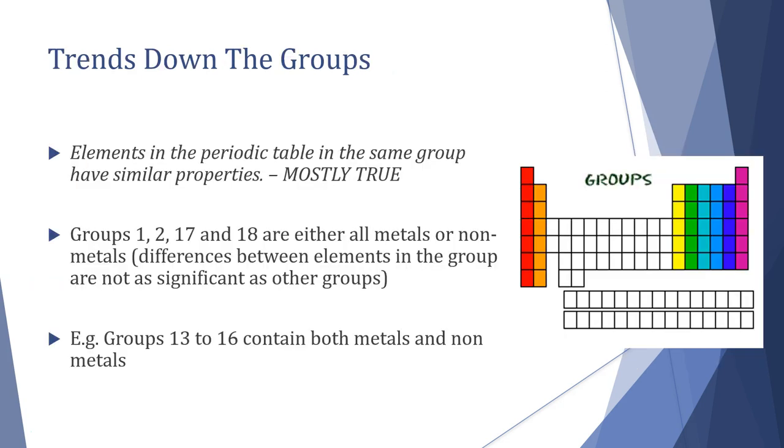So down the group, elements in the periodic table have similar properties - this is mostly true and certainly true for group one and group two, group 17 and group 18. However we do see some variation within here, and if you think about it there are non-metals at the top of these groups and then metals or metalloids towards the bottom. So in these groups where we have combinations of non-metals and metals we see different properties because we see different types of bonding within those substances.